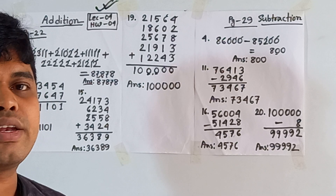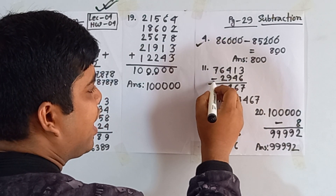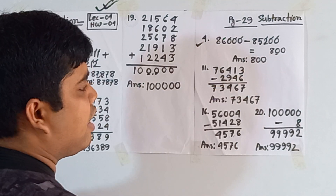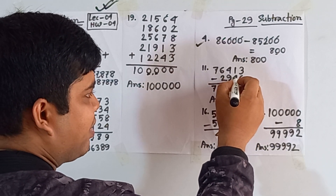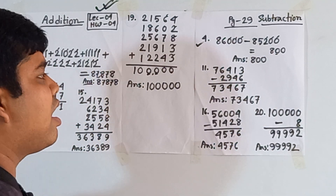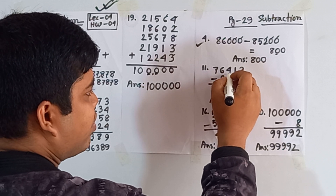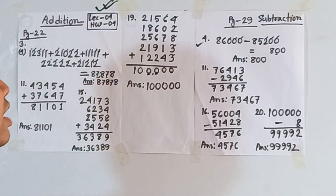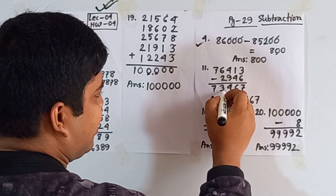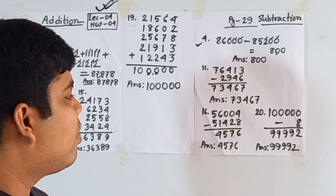Question number eleven: 76,413 minus 2,946. Ones place: 3 is smaller than 6, so borrow — 13−6=7. That 1 added to 4 makes 5; 5 is smaller than 4 — wait, 5 is greater than 1, so borrow — 11−5=6, carry 1. That 1 added to 9 makes 10; 10 subtracted from 14 gives 4, carry 1. That 1 added to 2 makes 3; 6−3=3. And 7 is placed there. So the answer is 73,467.